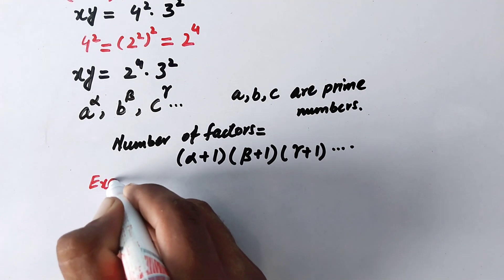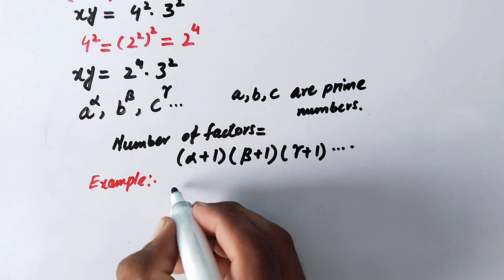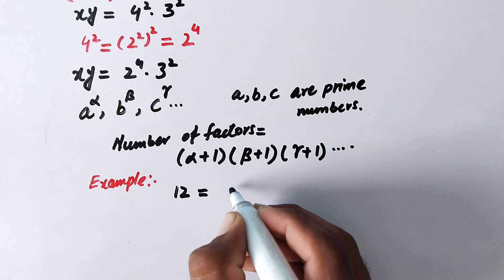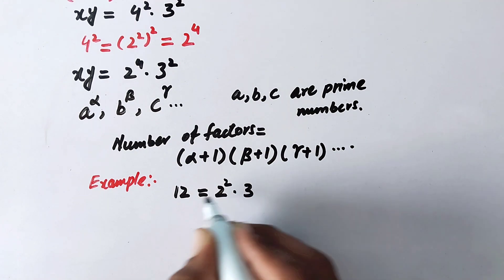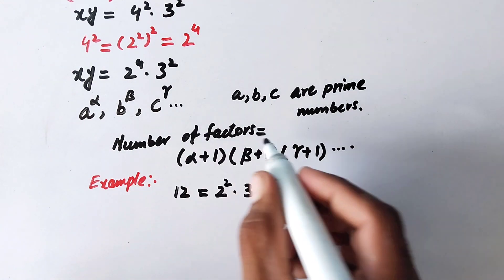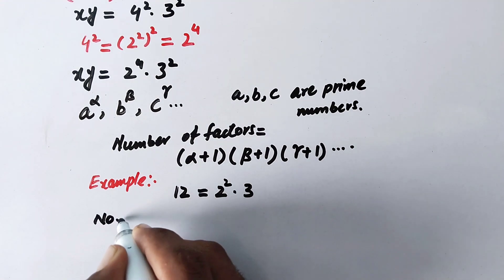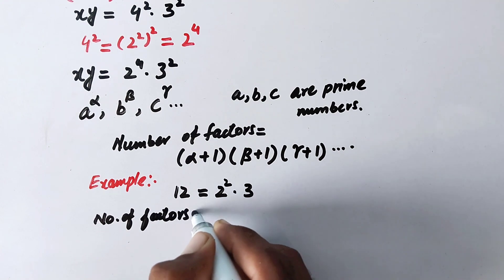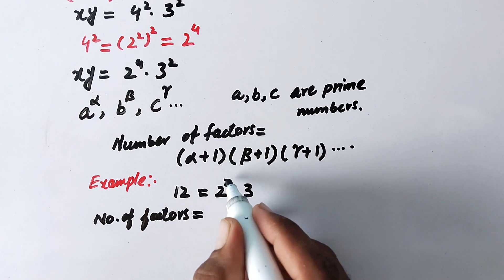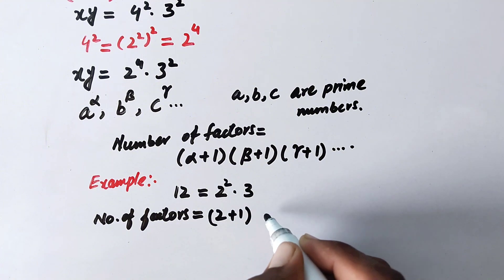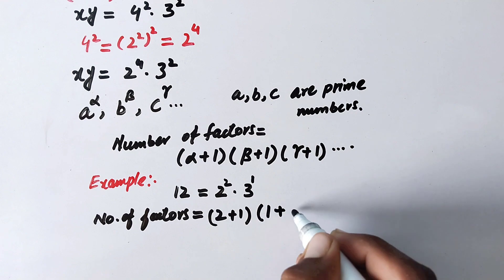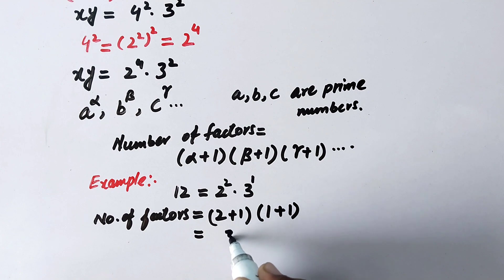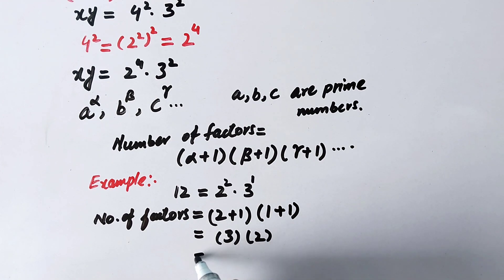Here we can take an example. We have the value 12, which can be written as 2 squared times 3. Now according to this formula of factors, we will find the number of factors as (alpha plus 1) times (beta plus 1), where alpha is 2 and beta is 1. So we get 2 plus 1 times 1 plus 1, which is 3 times 2, equal to 6. So the number of factors of 12 is equal to 6.